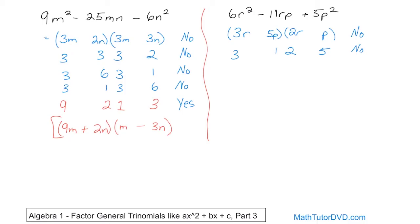What else times what else gives me 6? There's really only one thing — 6 times 1 is 6. And then I'll go back to 5 and 1. 6 times 1 gives me the 6, and 5 times 1 gives me the 5. And I examine the middle: 5 times 1 is 5, 6 times 1 is 6. Of course, you can add those and get 11. Remember, you always try to add or subtract them to see if you can get the middle number — that's a check on whether it's possible.